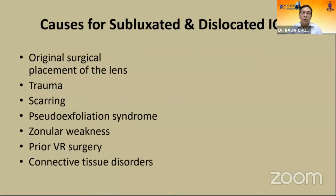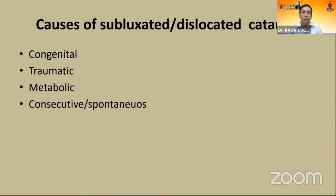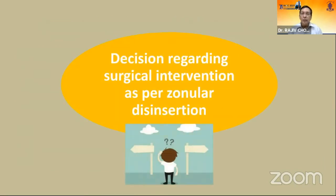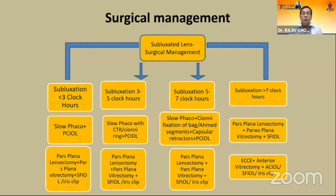There are multiple causes of subluxation and dislocated IOLs: congenital, traumatic, metabolic, consecutive. Decision regarding surgical intervention is as per the zonular dehiscence. There is a nomogram which guides whether it is 3 o'clock, 5 o'clock, 5 to 7, or more — and accordingly you can plan CTR and everything.